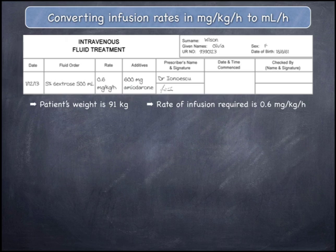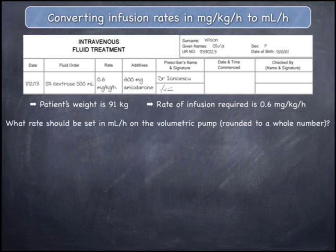The order displayed shows that a patient is ordered amiodarone 600 milligrams in 500 mils of 5% dextrose to infuse at 0.6 milligrams per kilogram per hour. The case notes, which are not displayed on the screen, tell you that the patient's weight is 91 kilograms. What rate of infusion in mils per hour should be administered via the volumetric pump, rounding to a whole number?